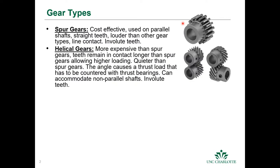Another type of gear is the helical gear, sometimes called high-power gears. They're more expensive, and the teeth remain in contact longer than spur gears, allowing higher loading, and they're typically quieter. The angle of the teeth causes a thrust load that must be counteracted by a thrust bearing. They can accommodate non-parallel shafts, including a 90-degree orientation, and also have involute teeth.